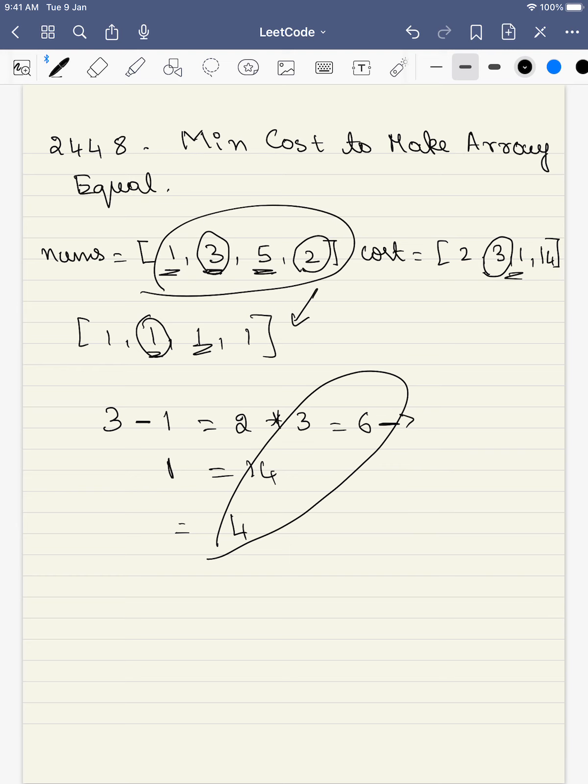So what do we have to do? We have to find the minimum cost that is required to make this array equal, where all the numbers are equal: 1, 1, 1, 1. You have to change the initial array to this array with the minimum cost possible. That is the problem.